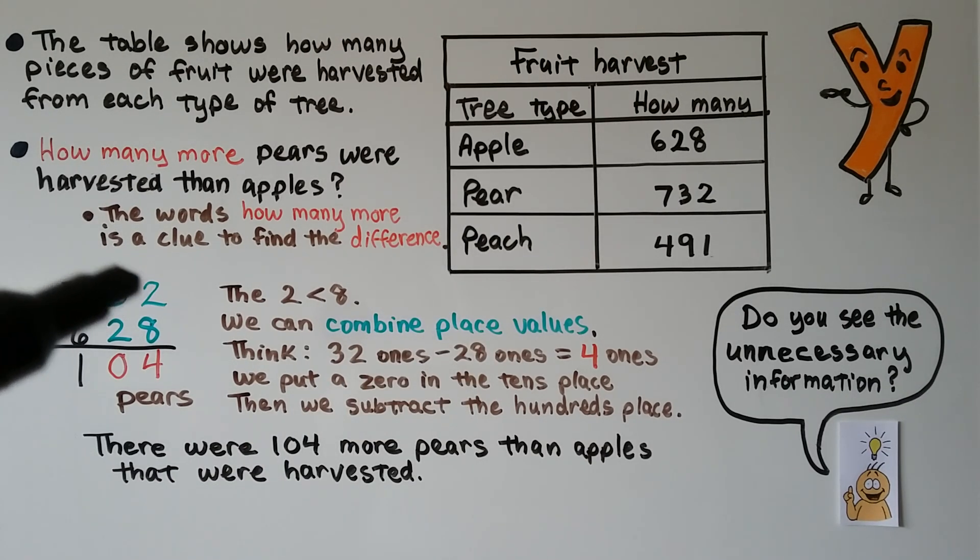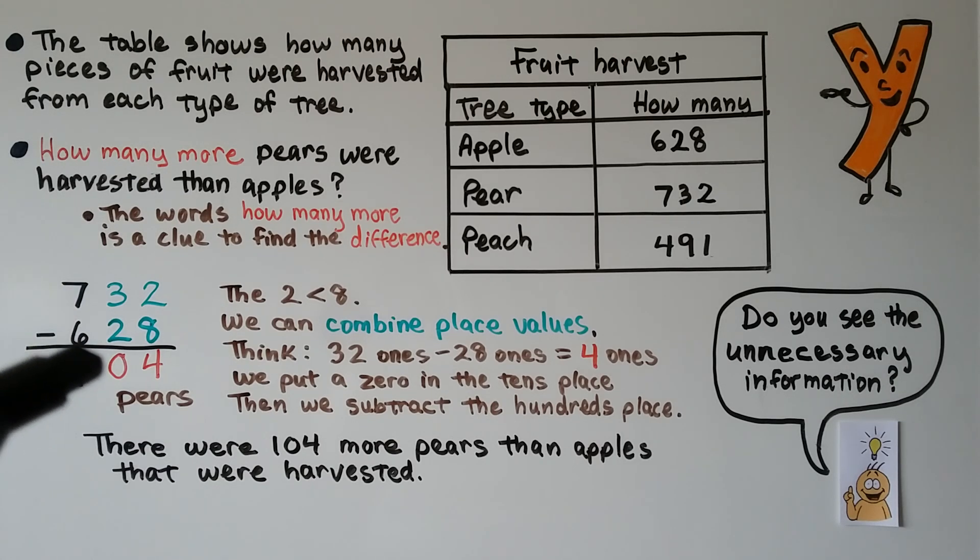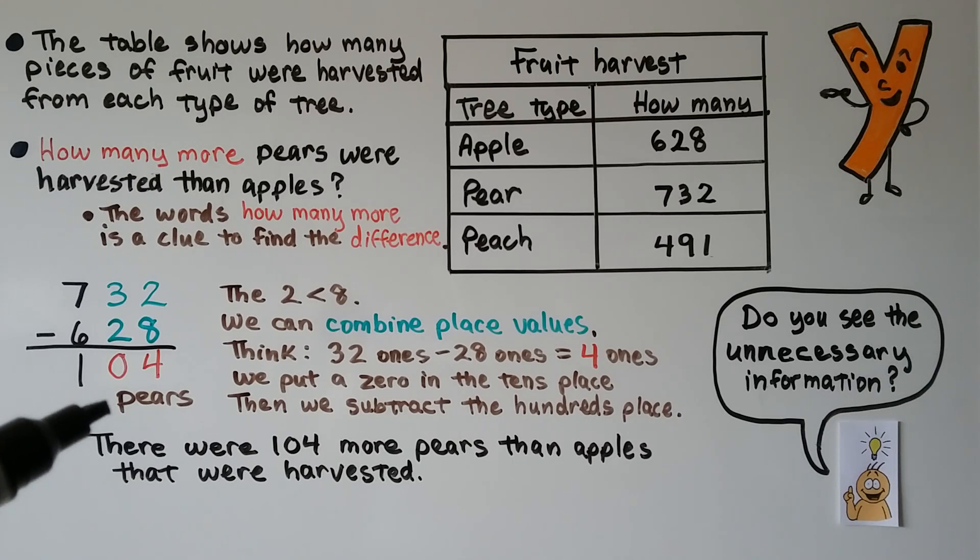This 2 is less than the 8, so we can combine the place values and think 32 ones minus 28 ones. That's 4 ones, and there's no tens, so we put a 0 in the tens place. Then we subtract the hundreds. 700 minus 600 is 100. So there were 104 more pears than apples that were harvested. We make sure we put the word pears here so that everyone knows what we were counting.